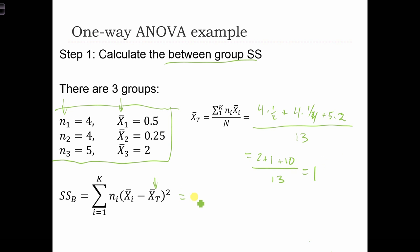So now let's do this summation. We've got N1, so 4 times x-bar 1 is 1 half, so 1 half minus 1. So we have minus 1 half squared plus N2, which is 4. And then we've got 1 quarter minus 1. So we've got minus 3 quarters squared plus 5 and 3 times 2 minus 1 squared. And this equals 8.25.